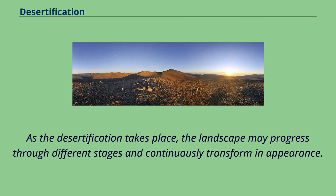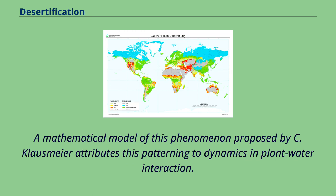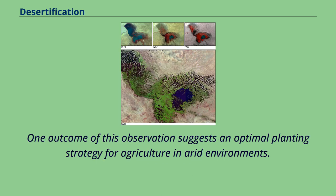As desertification takes place, the landscape may progress through different stages and continuously transform in appearance. On gradually sloped terrain, desertification can create increasingly larger empty spaces over a large strip of land, a phenomenon known as Brousse Tigrée. A mathematical model of this phenomenon proposed by C. Klausmeyer attributes this patterning to dynamics in plant-water interaction, and one outcome suggests an optimal planning strategy for agriculture in arid environments.